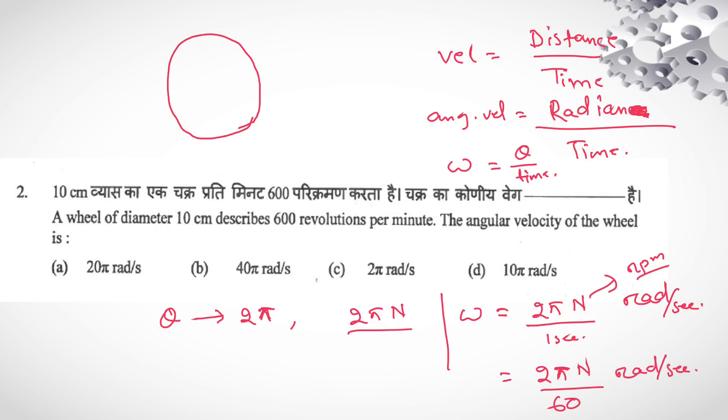It is in radian per second. So here in this question, revolution per minute given. If they will give in revolution per second term, then no need to divide 60. You can write just 2πn. But here they gave in revolution per minute term. So n equal to 600 rpm.